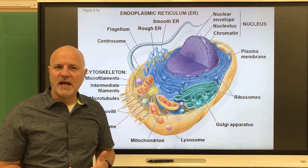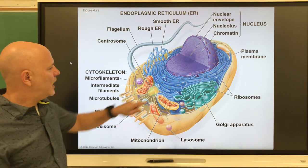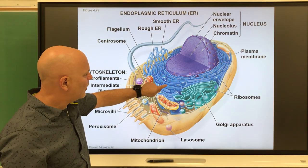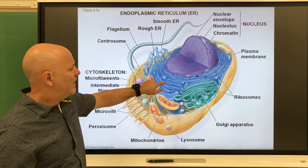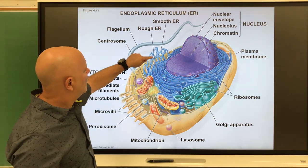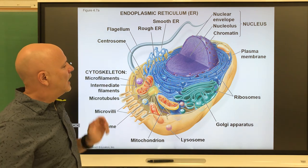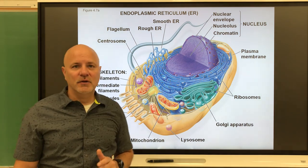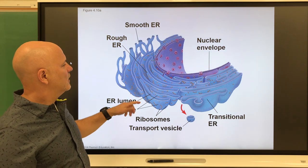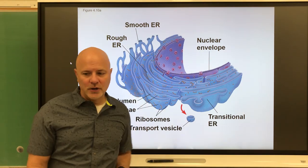One type has a bunch of ribosomes on it — that is known as the rough ER. The other, more tubular one without ribosomes is known as the smooth ER, or smooth endoplasmic reticulum.